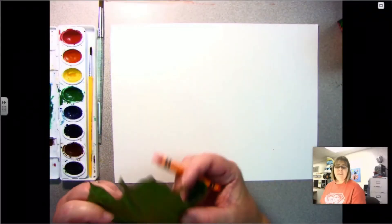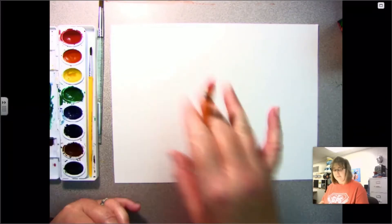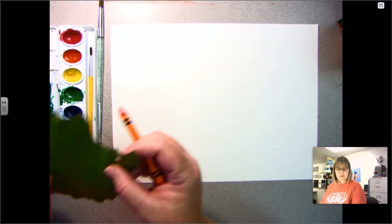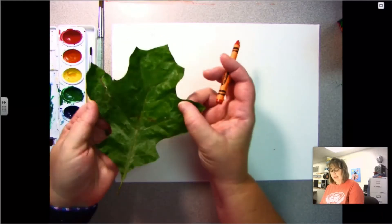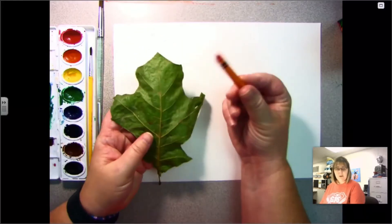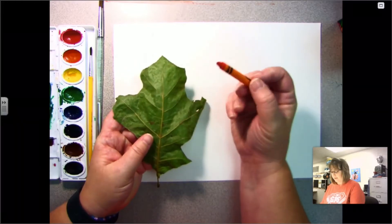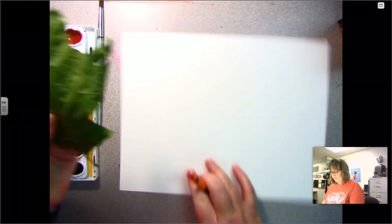Go ahead and gather all those things together, and I'm going to show you step by step what to do to make your own texture rubbings. I have all of my supplies ready. I'm going to get started with this leaf right here. I've also chosen a crayon color that I think would work.